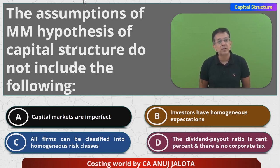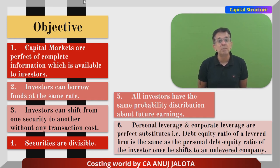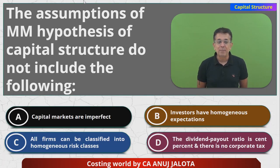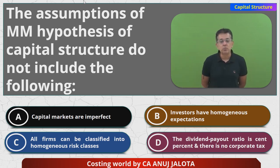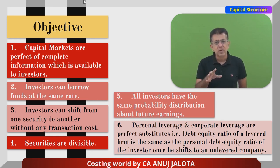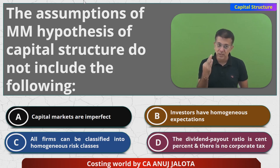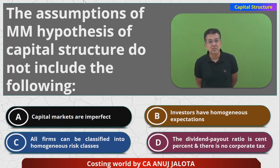Now let's go to the answer. The question asks which assumption MM does NOT include. Option A: capital markets are imperfect — this is directly false. The first assumption states capital markets ARE perfect, with complete information available to all investors. So option A contradicts the MM assumption, making A the answer. Option B: investors have homogeneous expectations — this IS an assumption, covered in assumption five where all investors have the same probability distribution.